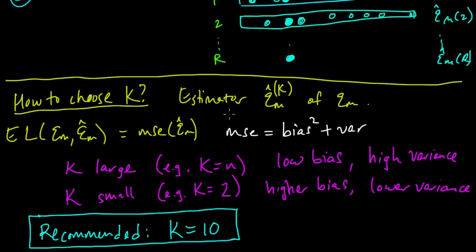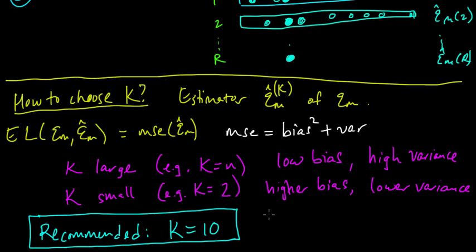That's kind of interesting — it turned out that k is a complexity parameter, and we were using it to choose the procedure we were going to use to choose the complexity parameter M. So there's something very interesting and introspective there. And if you wanted to get really crazy — though this would be totally silly — you could even imagine doing k-fold cross-validation to choose k itself. I don't think anybody actually does that, but it's an interesting thought.